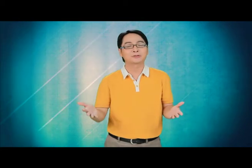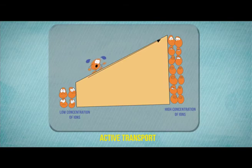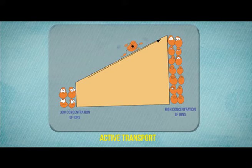In active transport, energy and carrier proteins are needed. This is because molecules move from a region of lower concentration to a region of higher concentration — the molecules are moving against the concentration gradient.